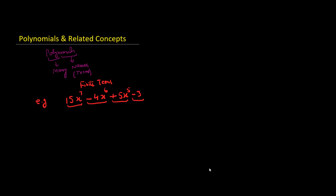As you know from the last lecture, a term has three components. Let's take this term — it has a coefficient which is 15, it has a variable or base which is x, and it has an exponent which is 7. Now that we are talking about polynomials, why is it important to keep these three components in mind? Because there are related concepts which involve the understanding of exponents.